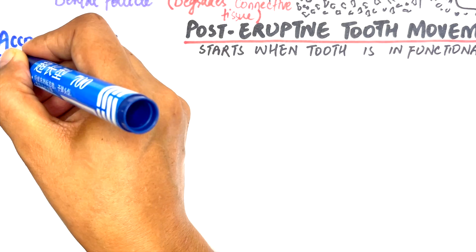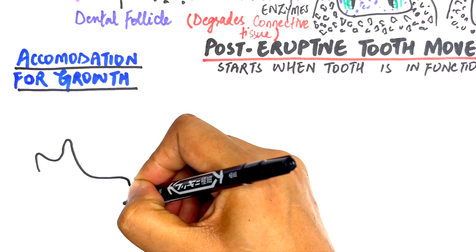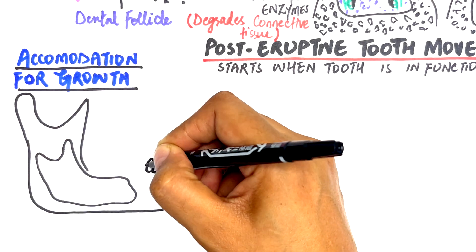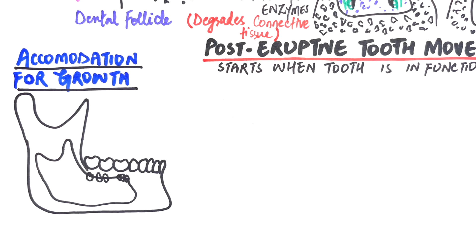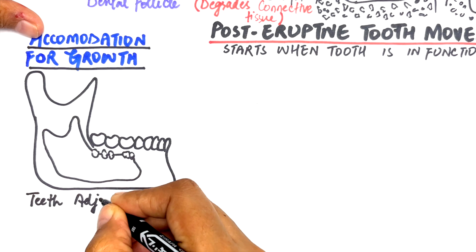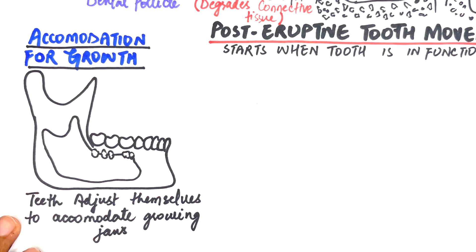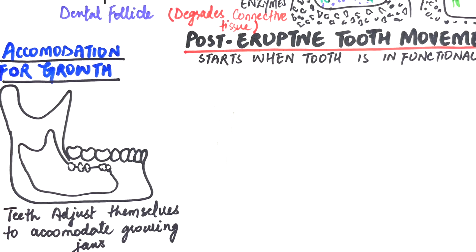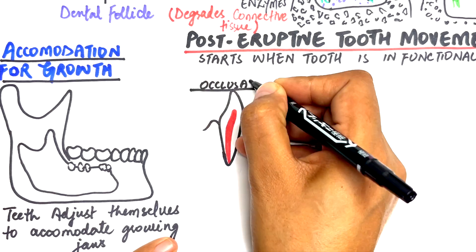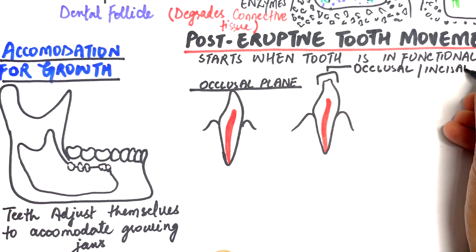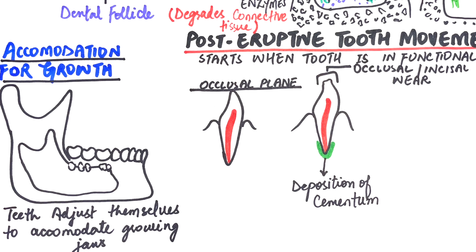As the jaw bones increase in width and height, teeth adjust themselves to accommodate the growing jaws. The readjustment of the teeth occurs in response to bone deposition in the alveolar crest height and the floor of the socket. Functional and parafunctional activities of the teeth can cause occlusal wear and a reduction in the height of the teeth. To re-establish occlusion, teeth move to compensate for occlusal wear. Compensation primarily occurs by continuous deposition of cementum around the apex of the tooth as the tooth keeps moving upwards.